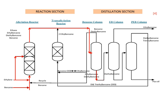The benzene column yields ethylbenzene and diethylbenzene as the bottom product. This is fed through the EB column, producing the desired product, which is ethylbenzene. The top product — benzene — is recycled to the alkylation reactor, where some of the benzene and diethylbenzene react to produce additional ethylbenzene.